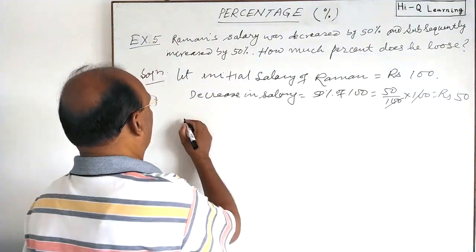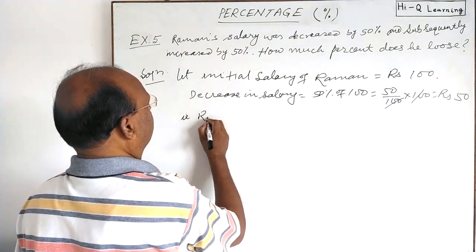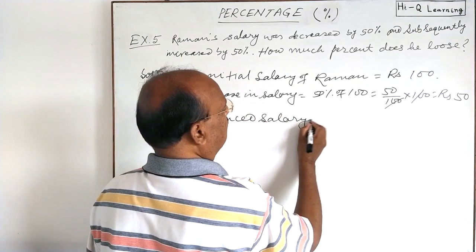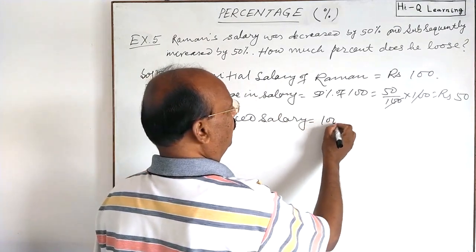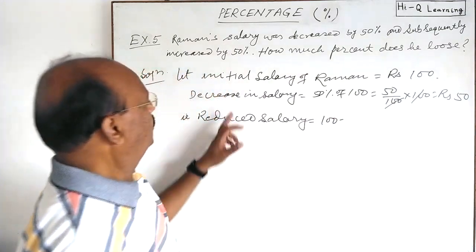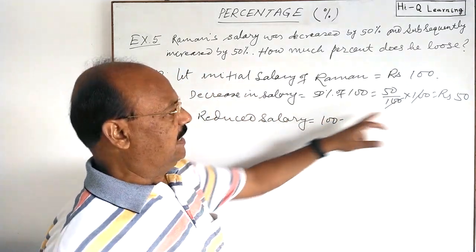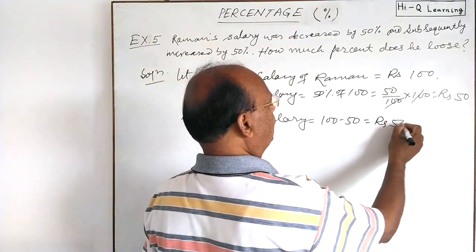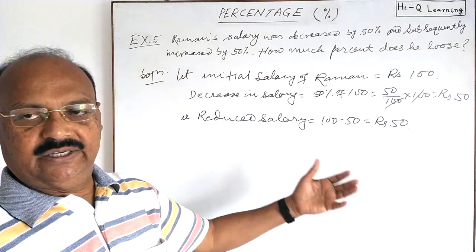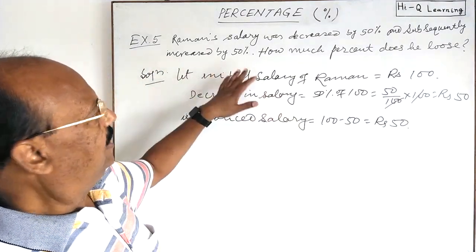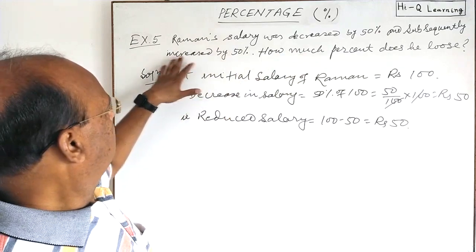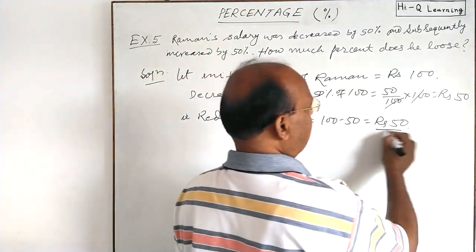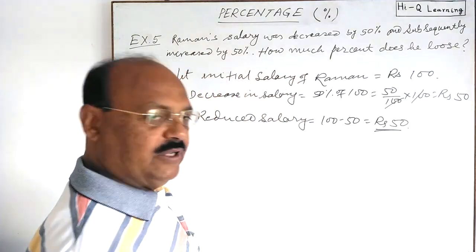So reduced salary will be how much? Initially it was rupees 100, and now decrease in salary by rupees 50, so this is reduced salary of rupees 50. Now you see the case here. Now salary increases by 50 percent, means this much amount increases by 50 percent.